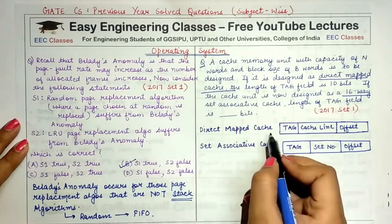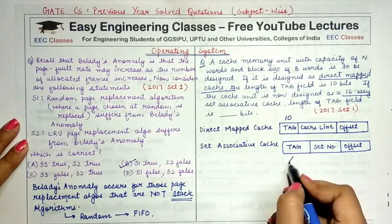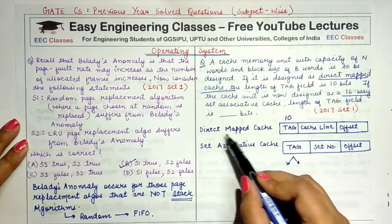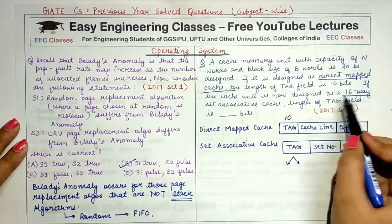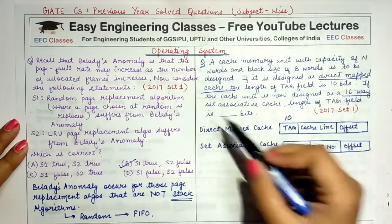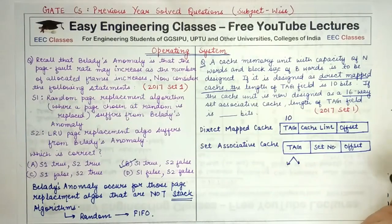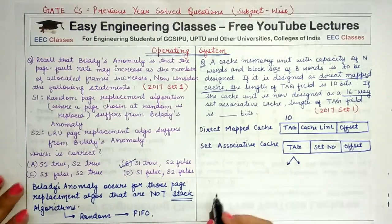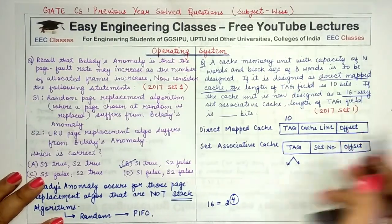A shortcut for this kind of question: in set associative cache, the tag field length equals the tag field bits of the direct mapped cache plus the additional bits needed for the set associative structure. A 16-way set associative cache means one set contains 16 blocks. Since 16 = 2⁴, four bits are required to represent one set.